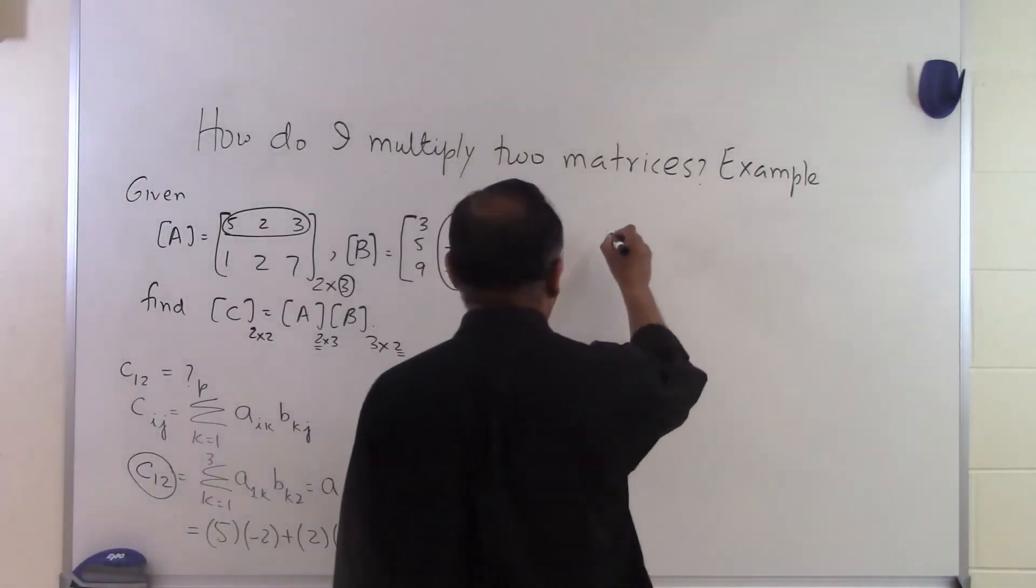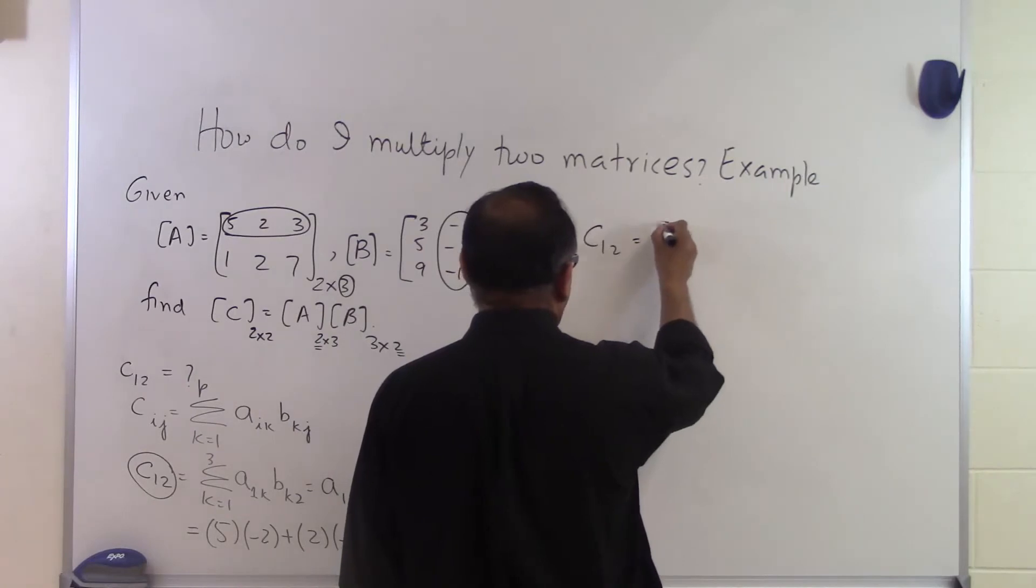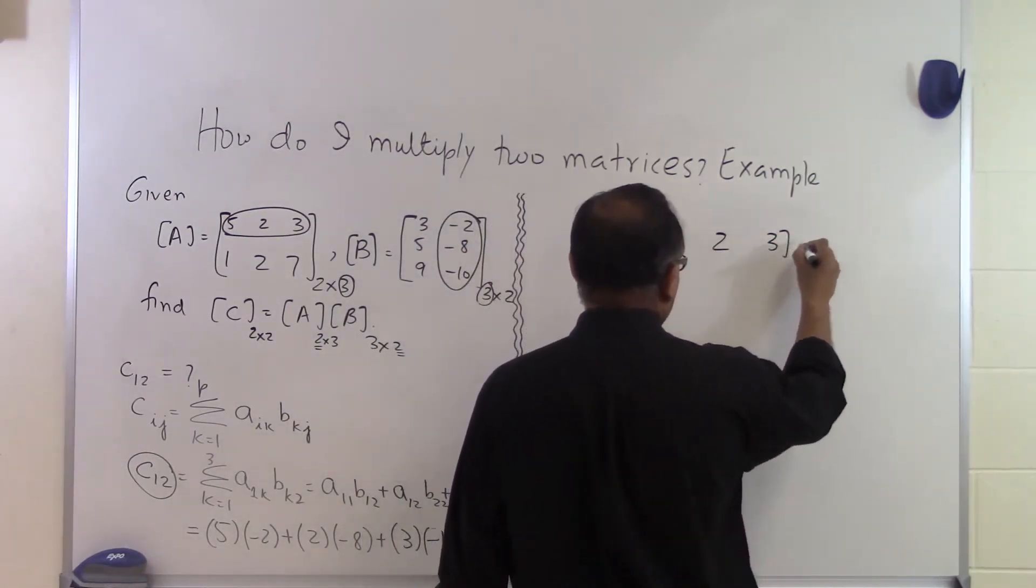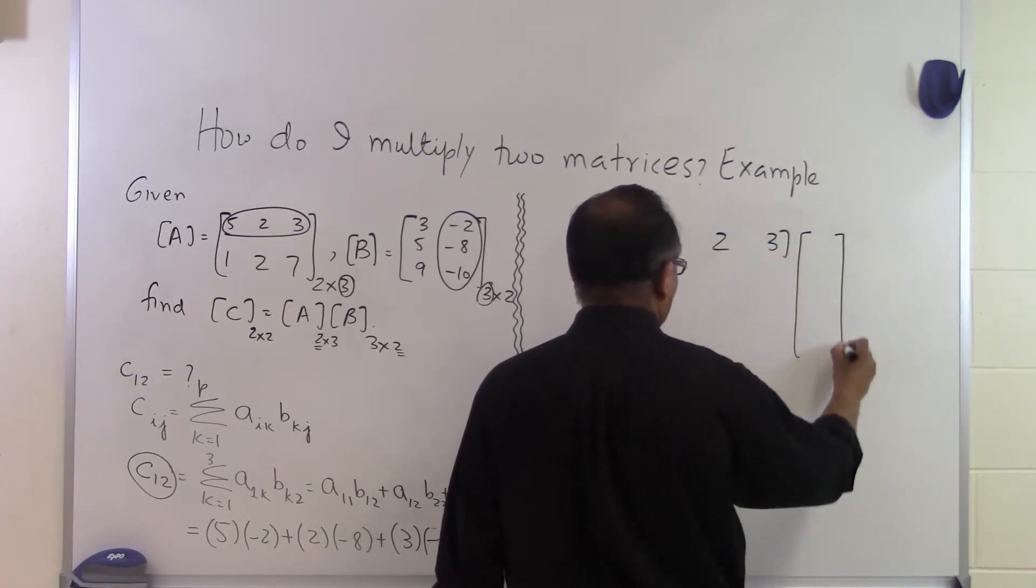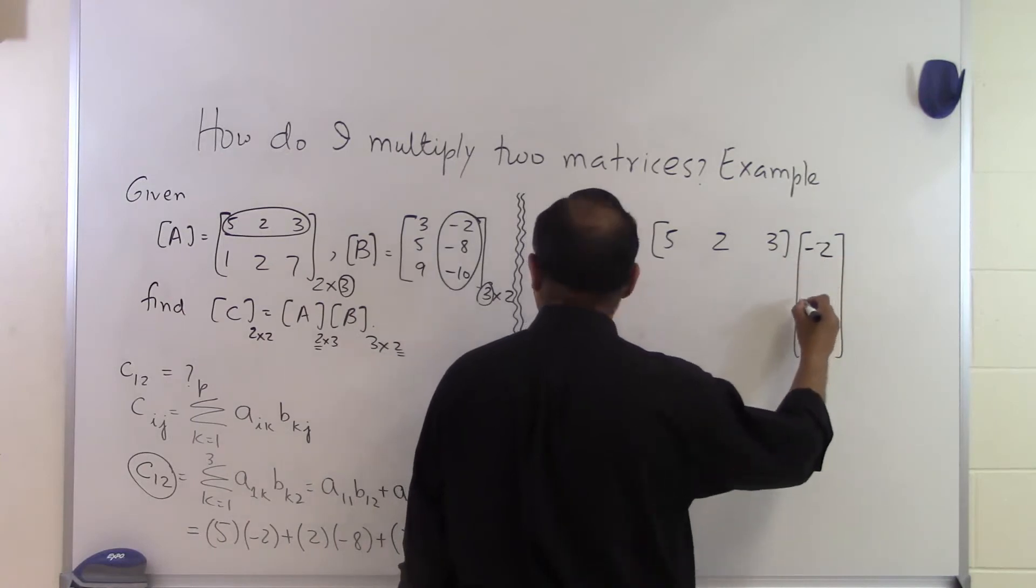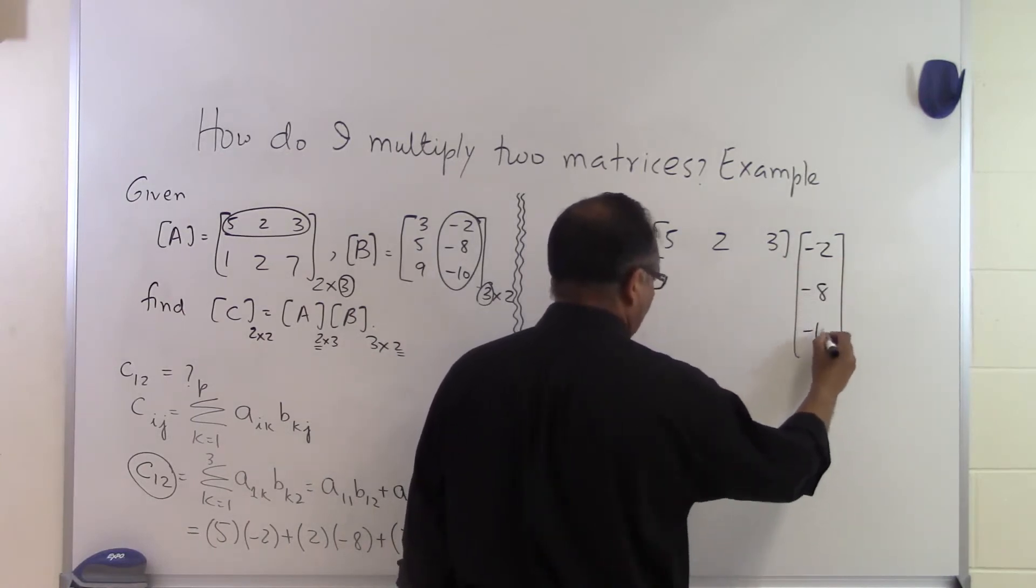So what that means is that in order to find the dot product C₁₂, I will take the first row of the A matrix and multiply it to the second column of the second matrix which is minus 2, minus 8 and minus 10.